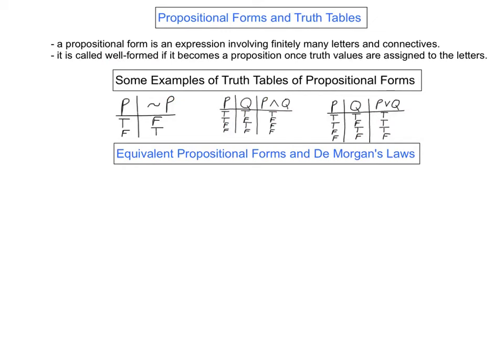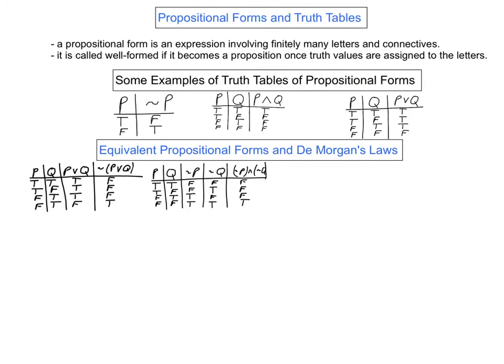We say that two propositional forms are equivalent if they have exactly the same truth values, even though they might look quite different from each other. The DeMorgan laws give two important examples of equivalent propositional forms. This is the truth table of the negation of the disjunction of P and Q. In order to get the first table, we begin by getting the entries for the disjunction of P and Q, and then we just negate those, so these have exactly the opposite truth values.